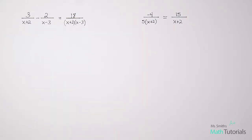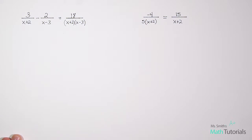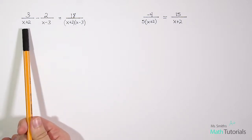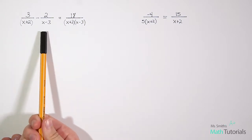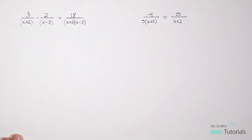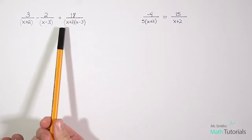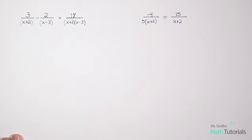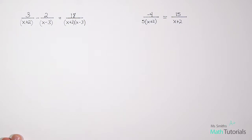Let's look at two more problems. In this first one we have 3 divided by x plus 2, minus 2 divided by x minus 3, equals 18 divided by (x plus 2)(x minus 3). Step one: factor any denominators. x plus 2 is already factored, x minus 3 is already factored, and (x plus 2)(x minus 3) is already in factored form — don't foil it, because you'd just get a quadratic trinomial you'd have to refactor. Leave it exactly as it is.